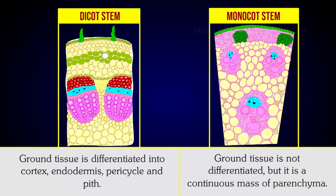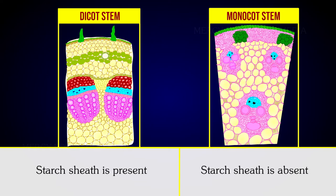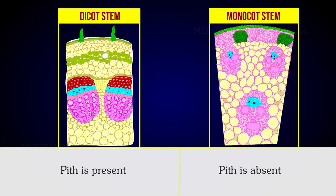Starch sheath is present in dicot stems. In monocot stems, the starch sheath is absent. Pith is present in dicot stems, whereas pith is absent in monocot stems.